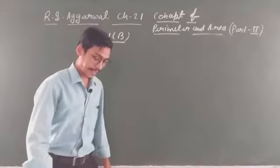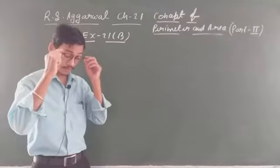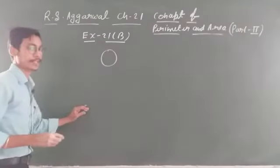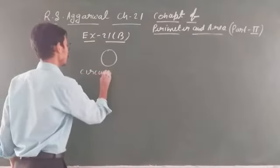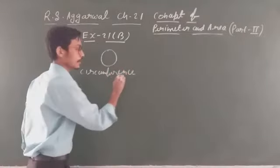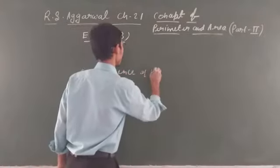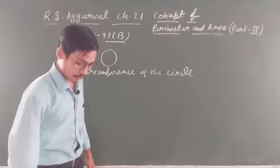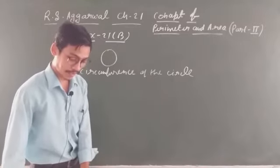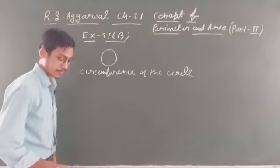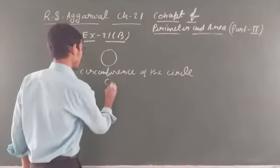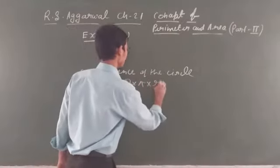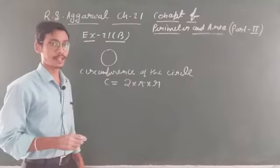In exercise 21B, the first question is to find the circumference of the circle. You know that if this is a circle, I will explain the circumference of the circle. I derived the formula in the previous video in NCRT — circumference of the circle. So we derive the formula: circumference of the circle equals 2 into pi into R. This is the formula of the circumference of the circle.